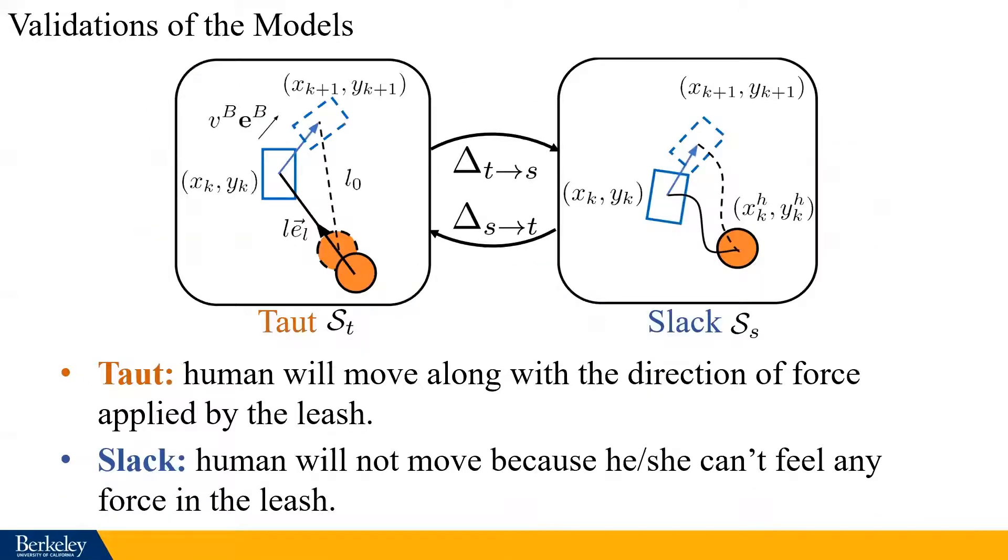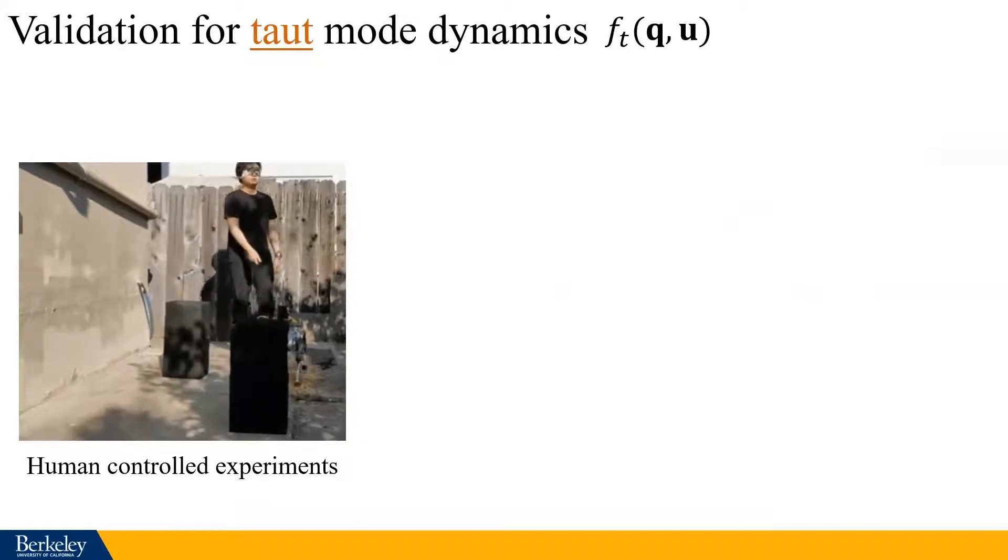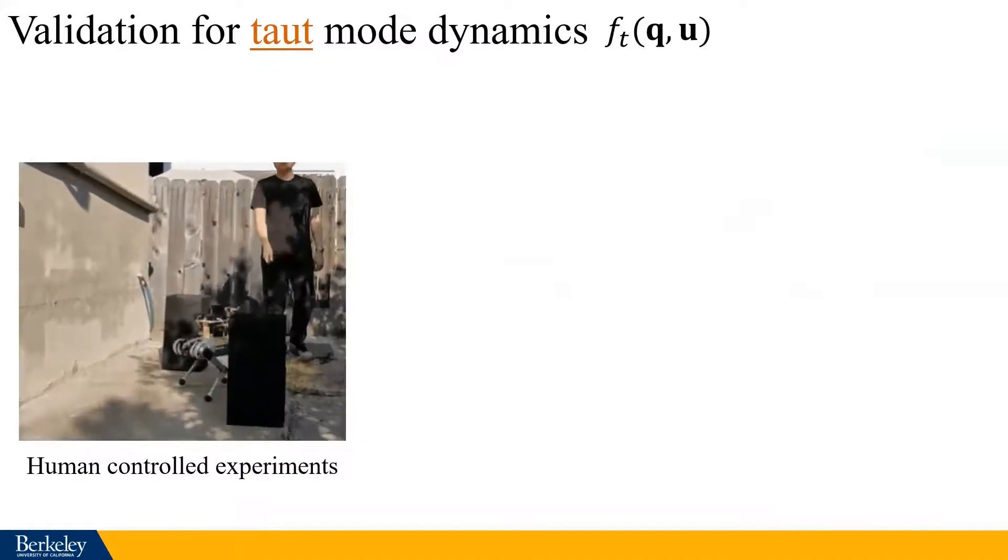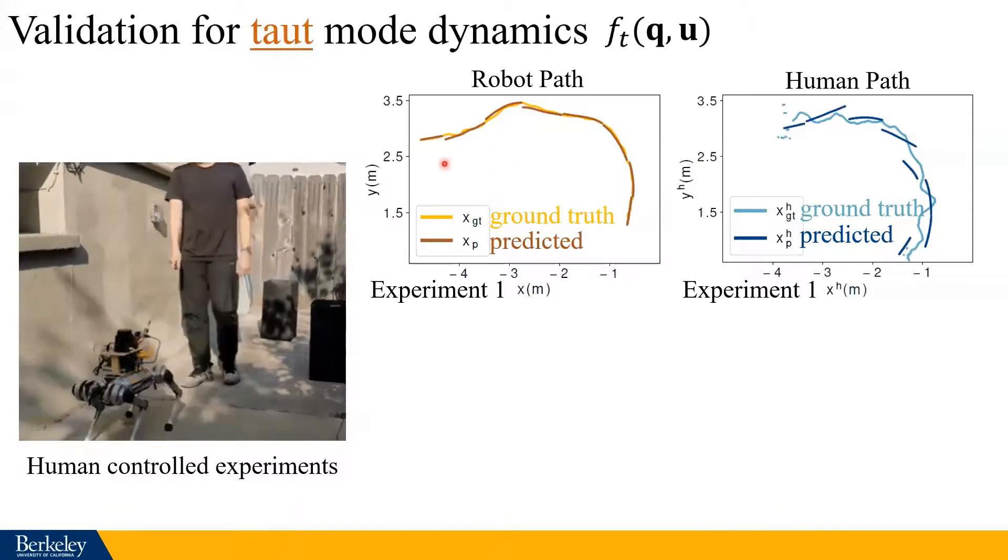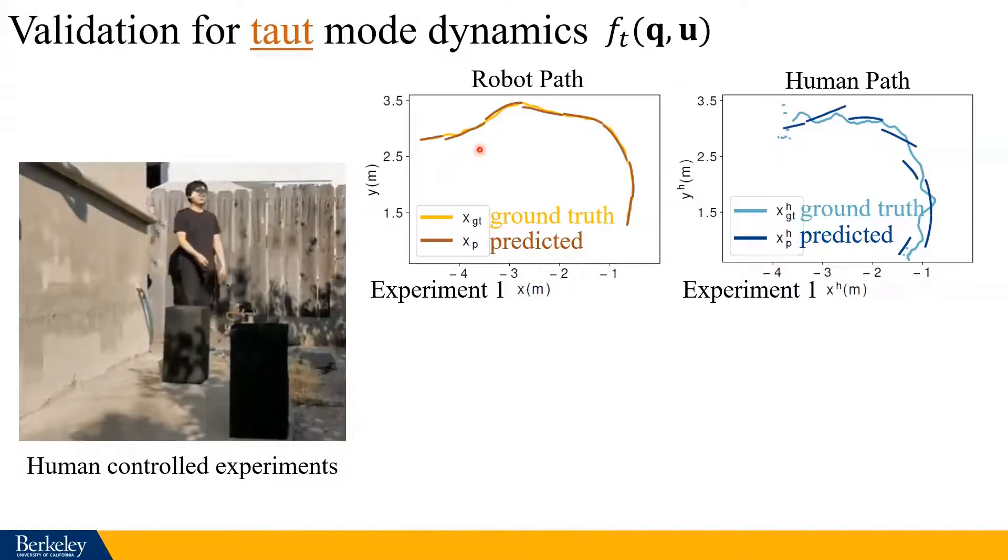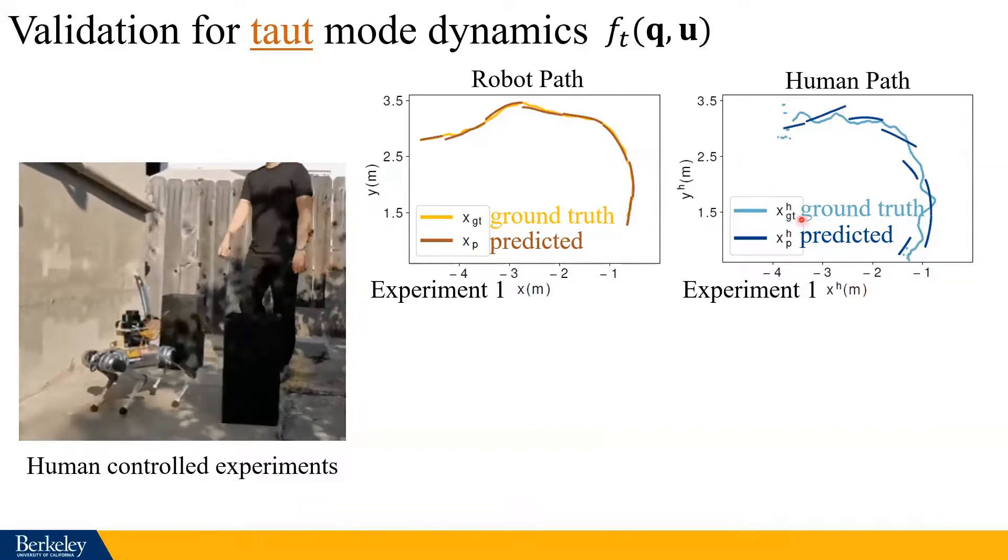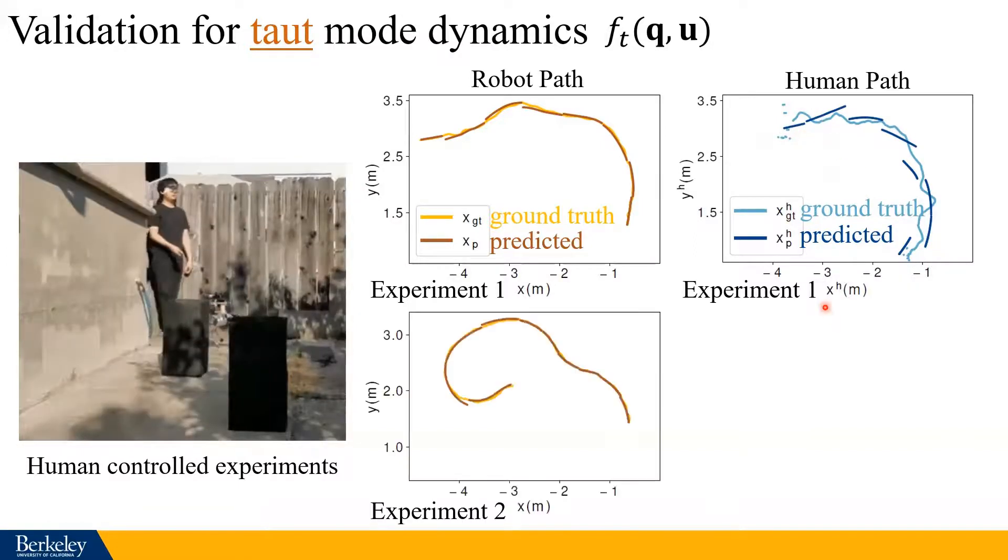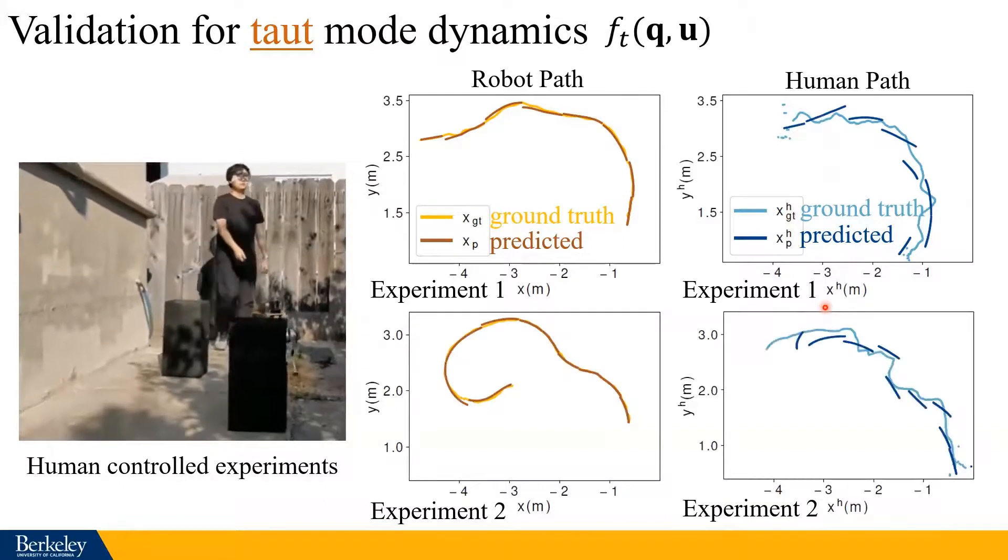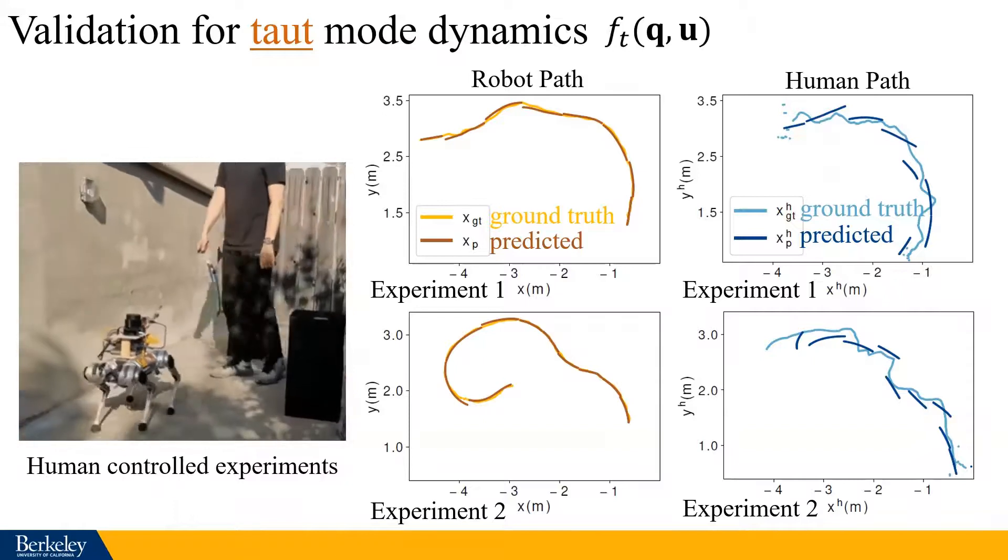However, both of these models are built based on some assumptions. But are they true? We validate these models by experiments. We firstly let the human operator control the robot to lead blindfolded person in order to always keep the leash in the taut mode. We use the proposed dynamics in the taut mode to predict robot and human trajectories. This is the robot path. The light yellow line is the matched robot position, which is the ground truth, while the dark yellow is the predicted robot position by the model. This is the human path. The light blue is the ground truth human position and the dark blue is the predicted human position. We did a lot of these similar experiments and the proposed taut mode dynamics shows reasonably good prediction accuracy for both human and the robot. Therefore, we can feel safe to assume that the dynamics of the taut mode is correct.